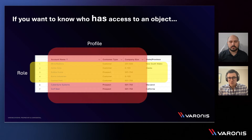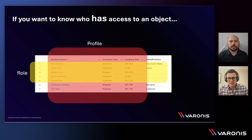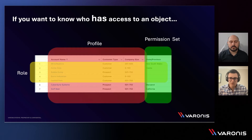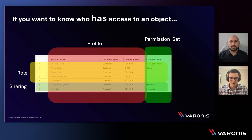Maybe this user goes on a special project and needs a little bit more access. We can add in permission sets that might give a few extra columns and the ability to see different attributes. Then maybe we have some sharing permissions as well, because a user might be covering for another employee in the organization.